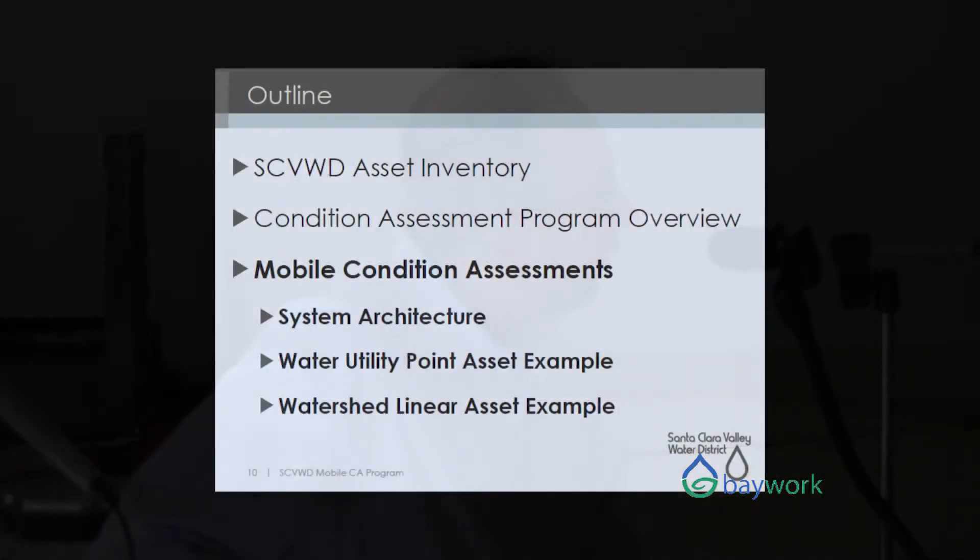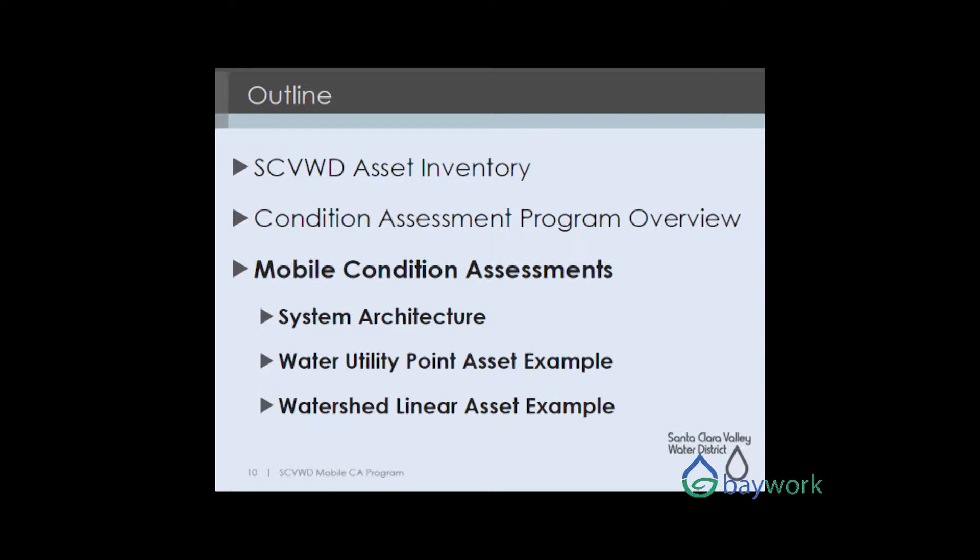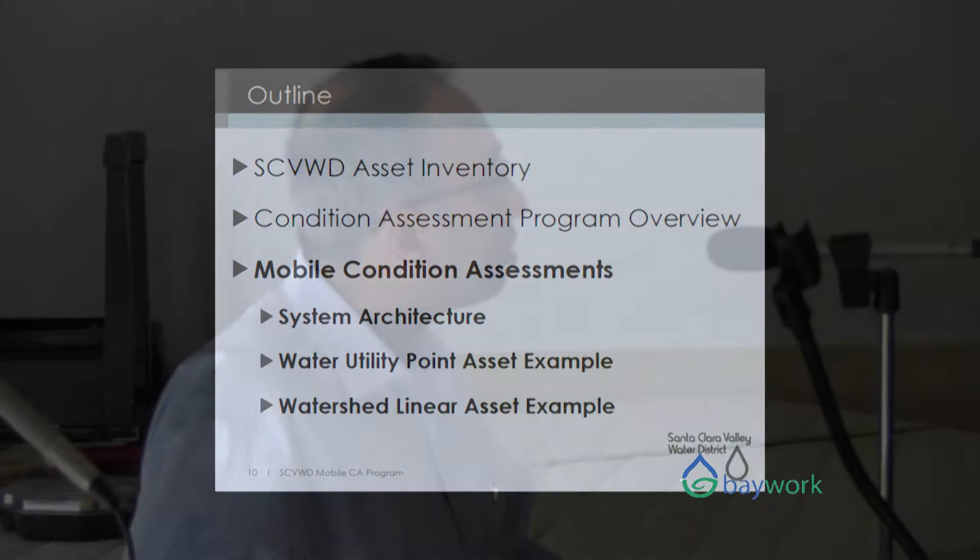When we started envisioning how to handle our assets, which are not just a treatment plant but our creeks and pipelines, we have a very strong GIS group which can do programming. It's a little different between just having a GIS group and a GIS group which can write in Python and do programming. Because San Jose State has a good GIS program at a master's level, they knew that.